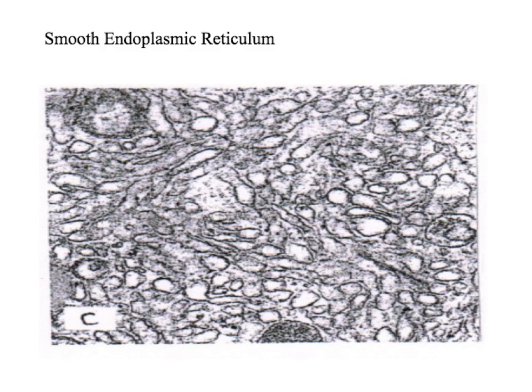The smooth endoplasmic reticulum is a really hard structure to identify. You can see lots of membrane that's not very organized — that's one of the ways you can tell it apart from a Golgi body. It's got lots of membrane folded over each other in no particular order. Smooth endoplasmic reticulum doesn't have any ribosomes, so there are no clear black dots to identify it. Its role is to synthesize carbohydrates and lipids.